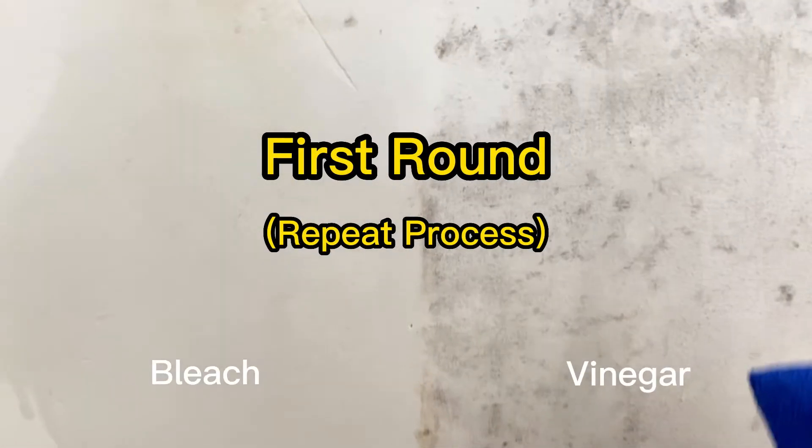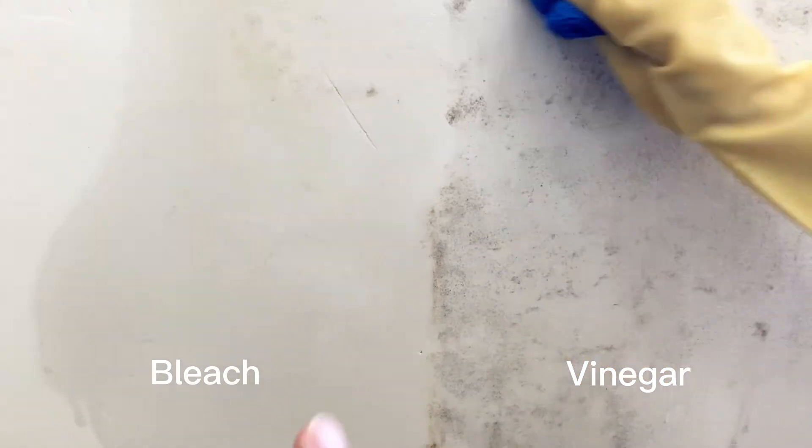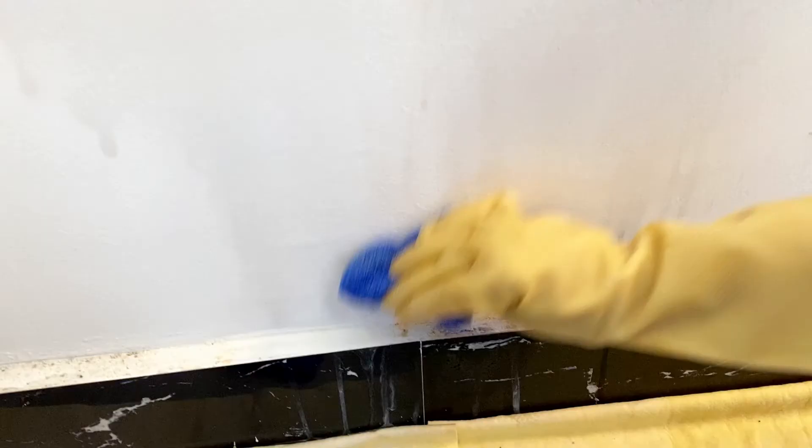All right so here's the results. On the right side is the white vinegar, on the left is the bleach. As you can see the bleach side is much cleaner with less stains. For the white vinegar side it's still very dirty so probably going to have to be a couple more rounds. But just because there's stains doesn't mean that the spores are still alive and going to be coming back.